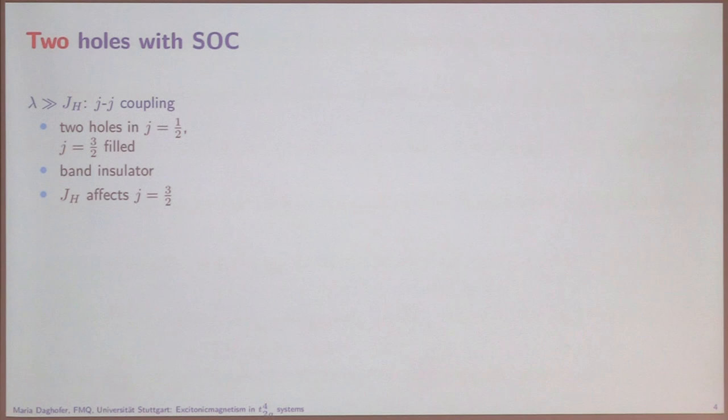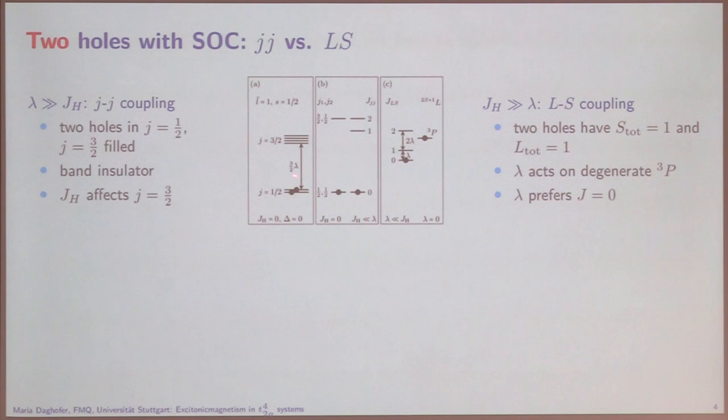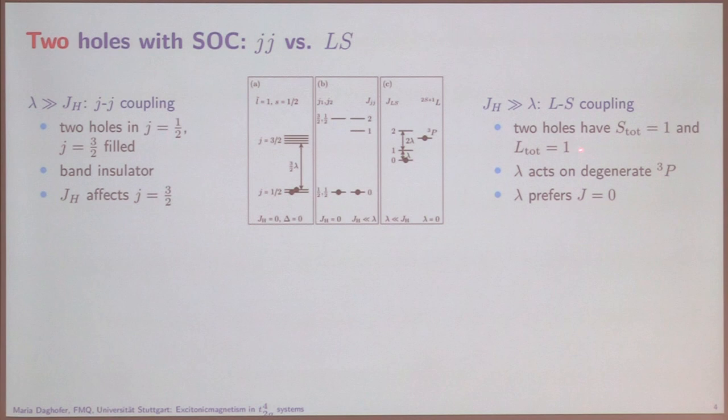What would Hund's coupling do? It would affect some excited state, so probably not be that interesting. We have the J=1/2; if there are two holes, that's a band insulator. If we make an excitation, that means putting one hole upstairs. Hund's coupling splits these levels a bit. But that's a bit unrealistic because one would need very large spin-orbit coupling. I'm more going to talk about the case where it's large and important, but not that large.